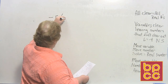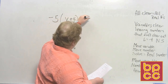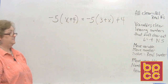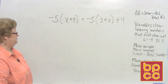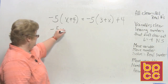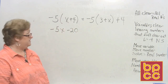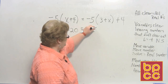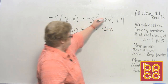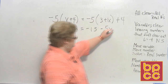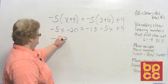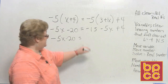Let's try −5(x + 4) = −5(3 + x) + 4. We've got some distribution to do and maybe some combining of like terms. Distributing the left side: −5 times x is −5x, and −5 times 4 is −20. On the right: −5 times 3 is −15, and −5 times x is −5x, plus 4. So we have −5x − 20 on the left.